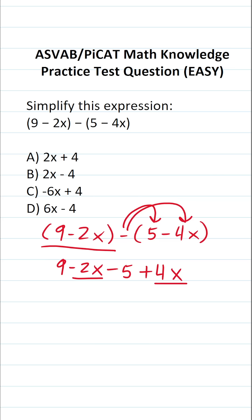I can read this as 4x minus 2x, which is going to be 2x. Now that I've combined them, I'm going to cross them out. Then we have 9 minus 5, which is 4. So when we simplify this expression, we get 2x plus 4, which is answer choice A.